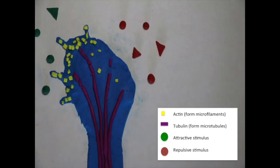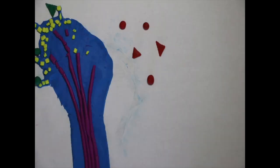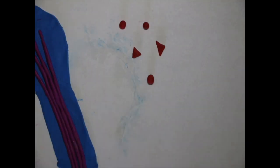In order for net movement to occur, integrins on the surface of the growth cone form temporary focal adhesions with the extracellular matrix to pull the neuron along.